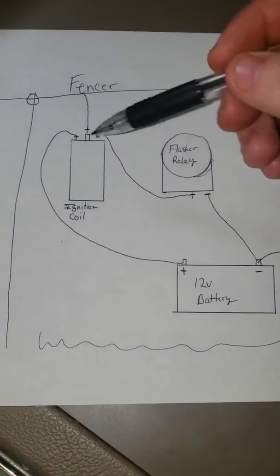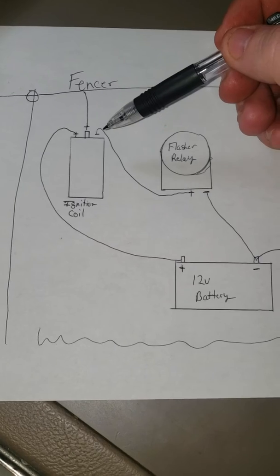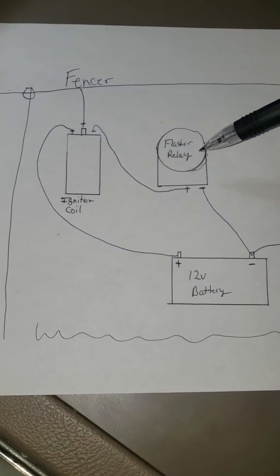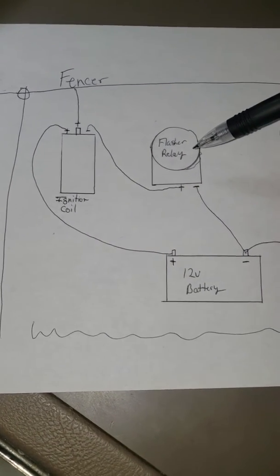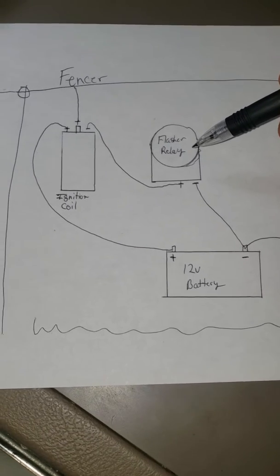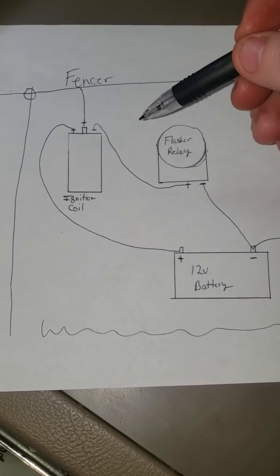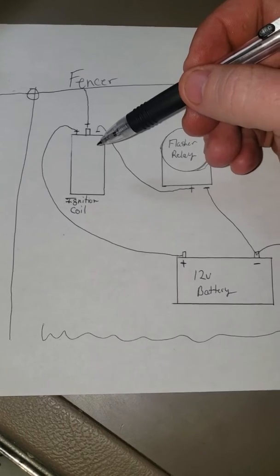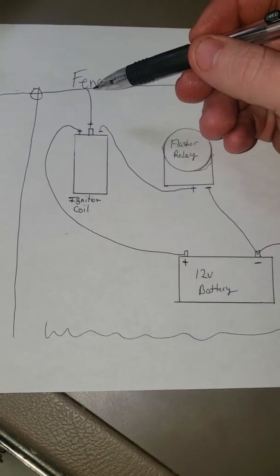What happens is when the power runs through the ignition coil to the negative side, it runs to the flasher relay, triggers the flasher relay, which in turn fires the ignition coil and sends power to the fencer.